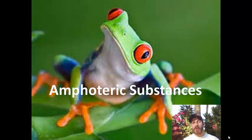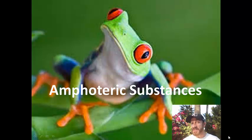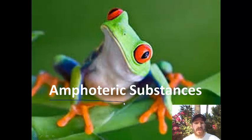Many of you are probably wondering why I have a frog on here. We talk about a frog as being an amphibian because it lives on land and water. Today we're going to talk about amphoteric substances, which means a substance that behaves as both an acid and a base. So amphoteric and amphibian have something in common.